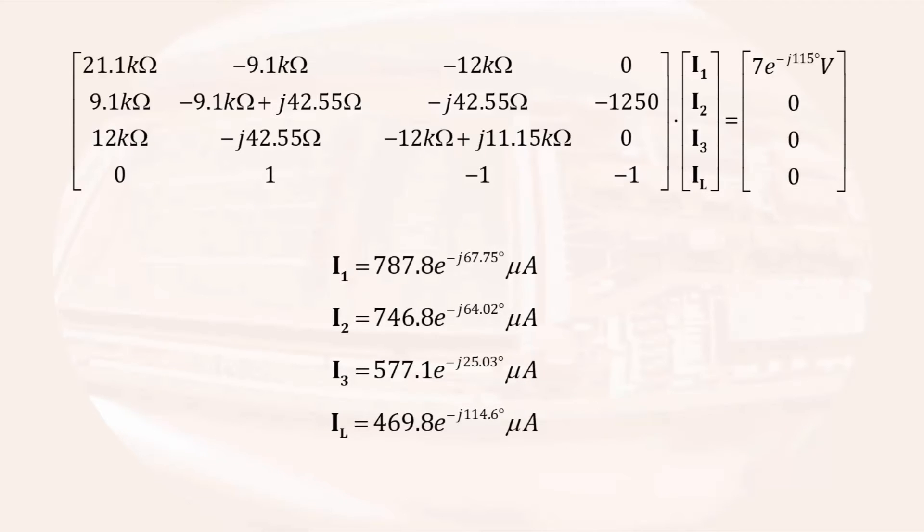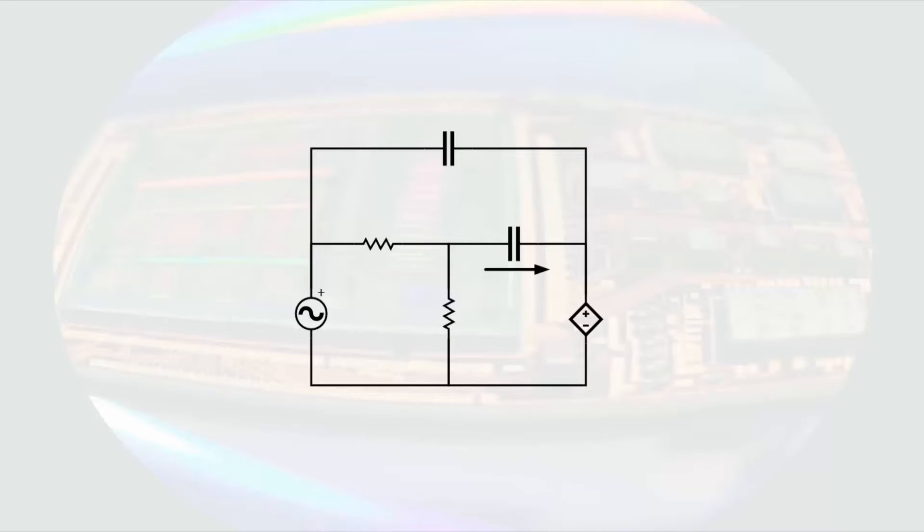We are trying to determine the current IL of T, so if we grab the phasor current for IL, it is converted back to the time domain by putting the magnitude and phase angle into the cosine function, so IL of T is equal to 470 cosine 50,000 radians per second times time minus 115 degrees microamps.